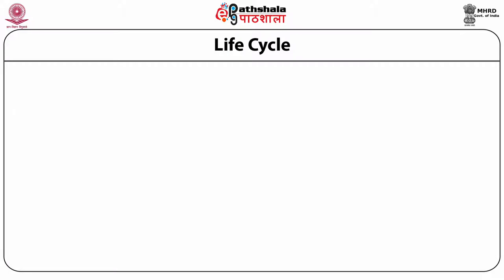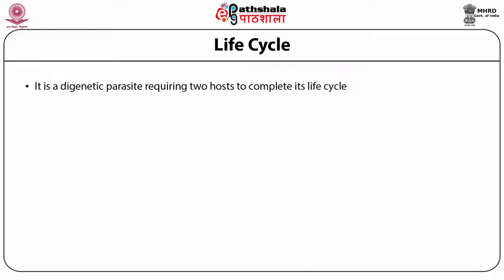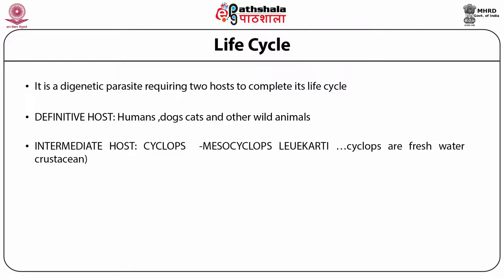After studying the morphology, let us see what its life cycle is like. It is a digenetic parasite requiring two hosts. The definitive hosts are humans, dogs, cats and other wild animals, while the intermediate host is Cyclops, a freshwater crustacean — more precisely, Mesocyclops leuckarti. The lifespan of the female is one year and that of the male is six months. Males are short-lived and die soon after copulation.